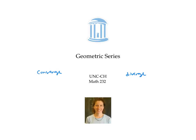In this video, we looked at geometric series with first term a and common ratio r. We saw that a geometric series will converge if the absolute value of r is less than one, and diverge if the absolute value of r is greater than or equal to one. In the case that it converges, it converges to a over one minus r, where a is the first term and r is the common ratio.